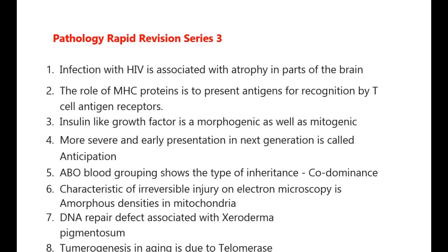ABO blood grouping shows the type of inheritance that is co-dominance. Characteristic of irreversible injury on electron microscopy is amorphous densities in mitochondria.